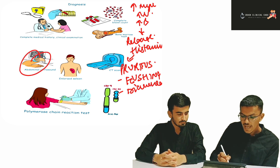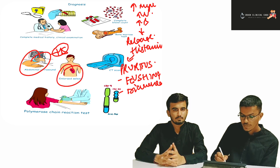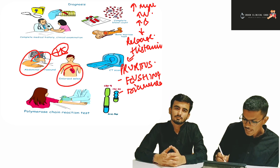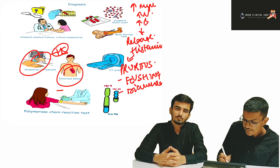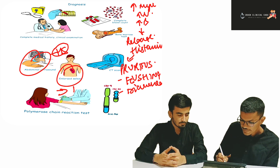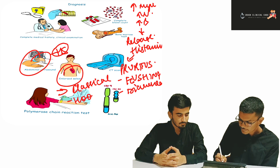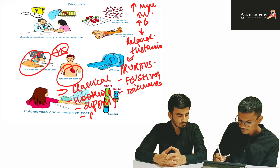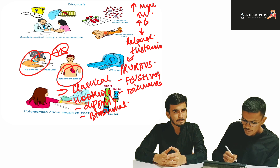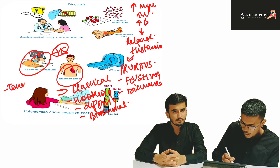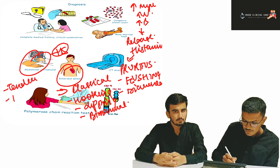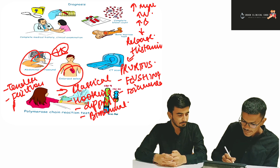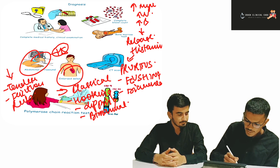An abdominal scan is done to look for hepatosplenomegaly. The spleen can be palpated by four clinical methods: classical, hooking, dipping, and bimanual wave. Initially the spleen is non-tender, but when the spleen is tender along with a splenic friction rub, it indicates that the spleen has undergone infarction.